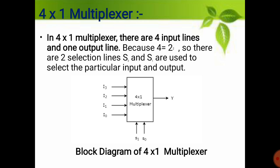See the block diagram of the 4-to-1 multiplexer. A 4-to-1 multiplexer has 4 data inputs: i3, i2, i1, i0, and 2 selection lines S1 and S0, and 1 output that is Y, as per this block diagram.